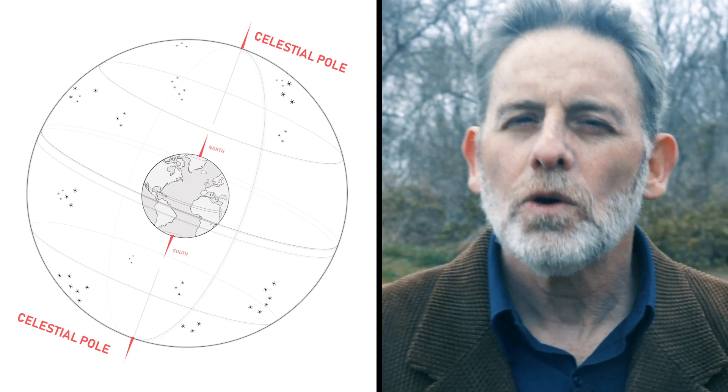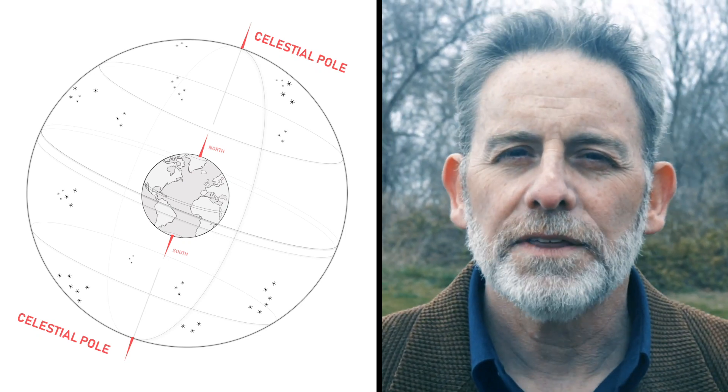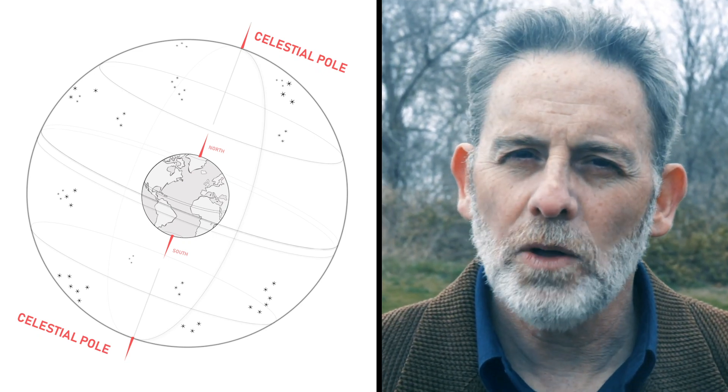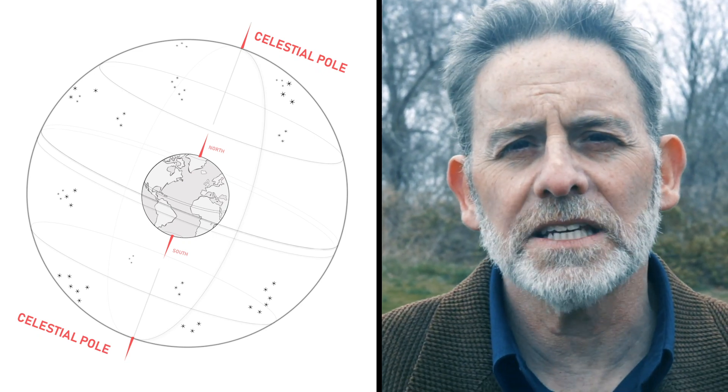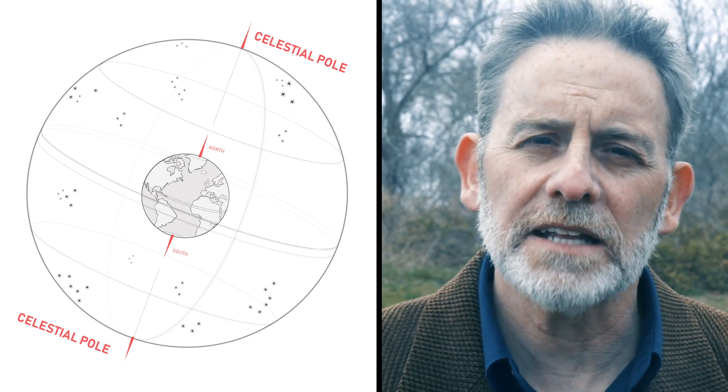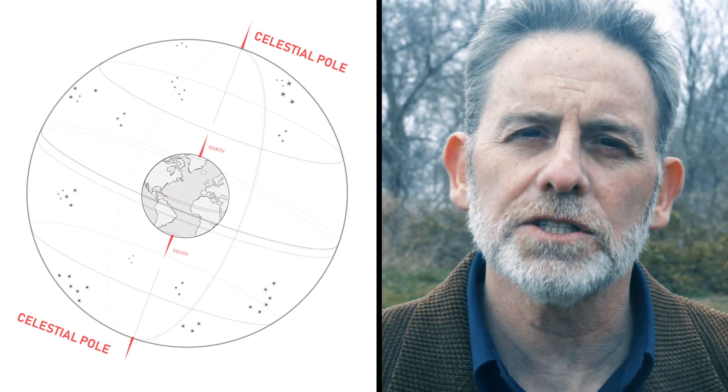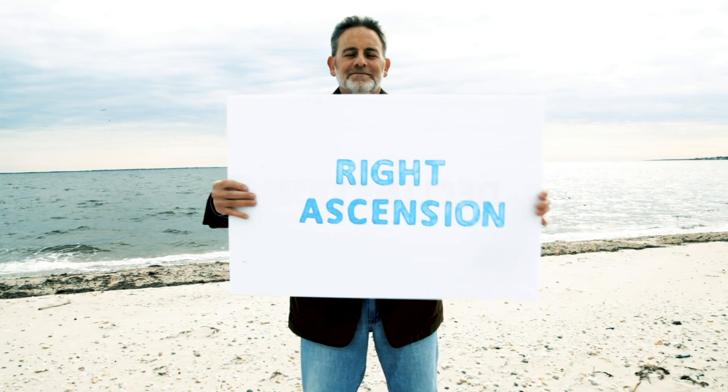The north and south celestial poles are the points which Earth's rotational axis would intersect the celestial sphere. The position of a celestial body is described by two angles: right ascension and declination.